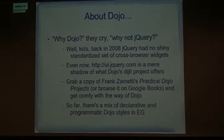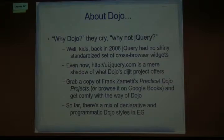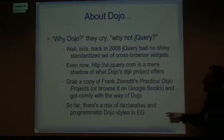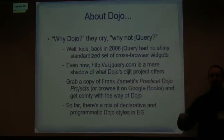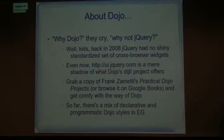The declarative way of programming is to add divs that have a Dojo type attribute on it. If you're an HTML purist, that looks really lovely. The alternative way is programmatic, where you're using JavaScript to create Dojo objects. You've got a nice mix with Dojo.